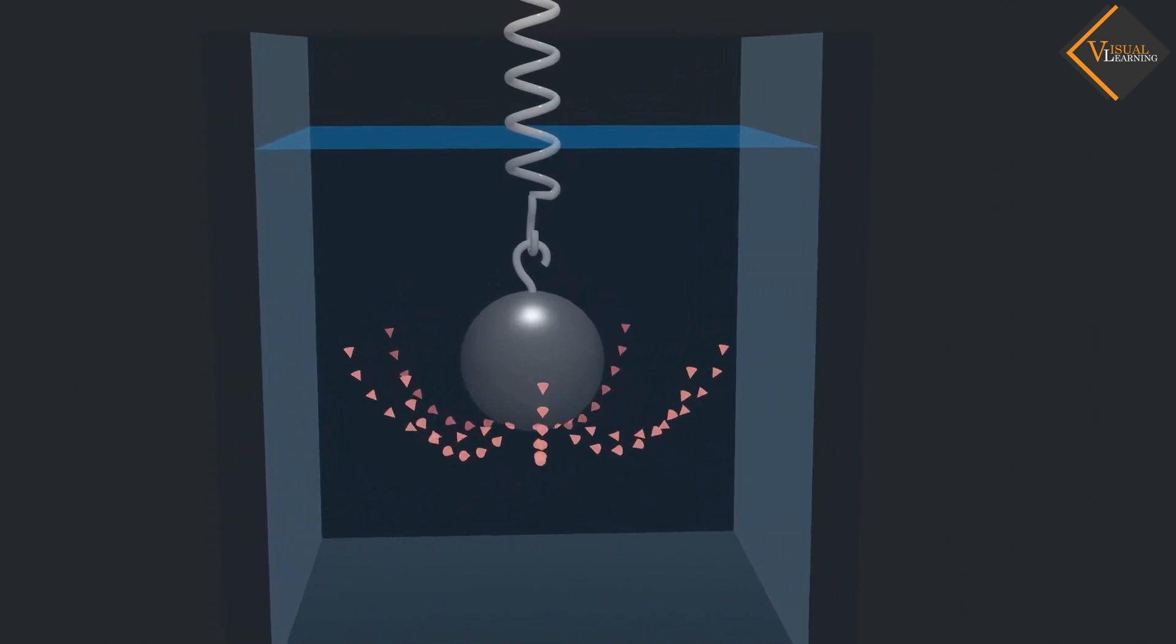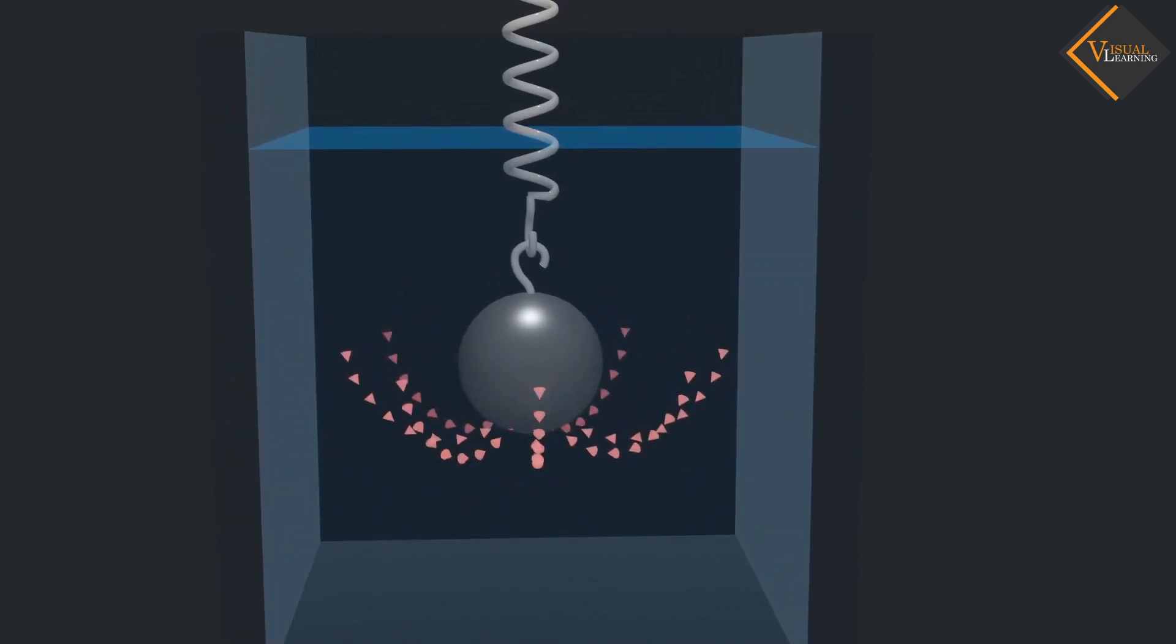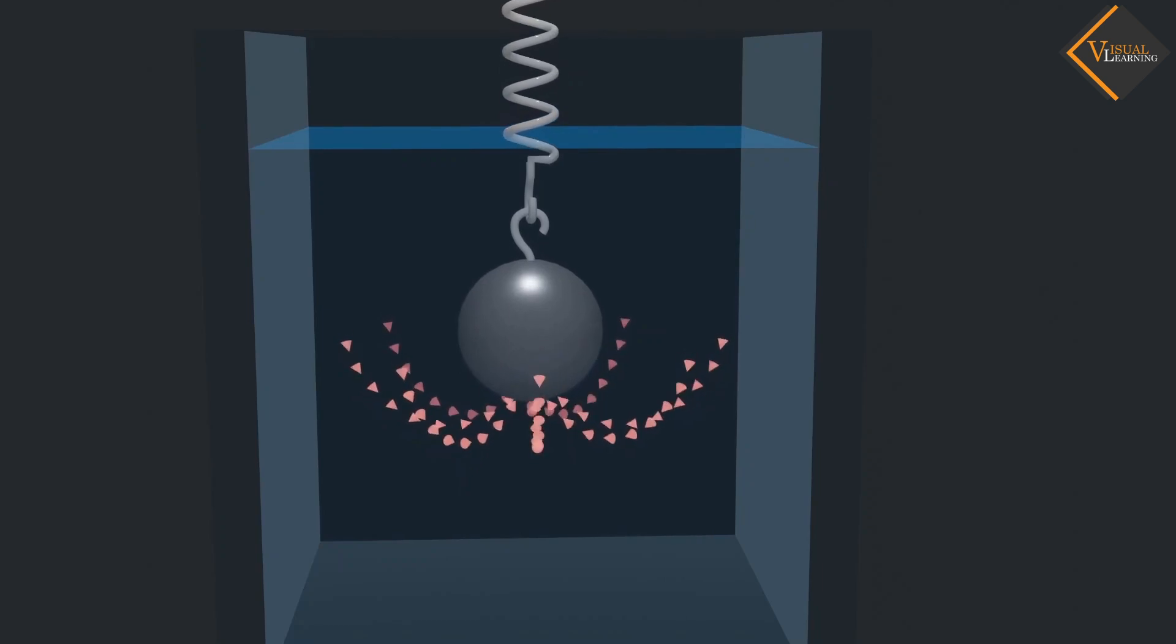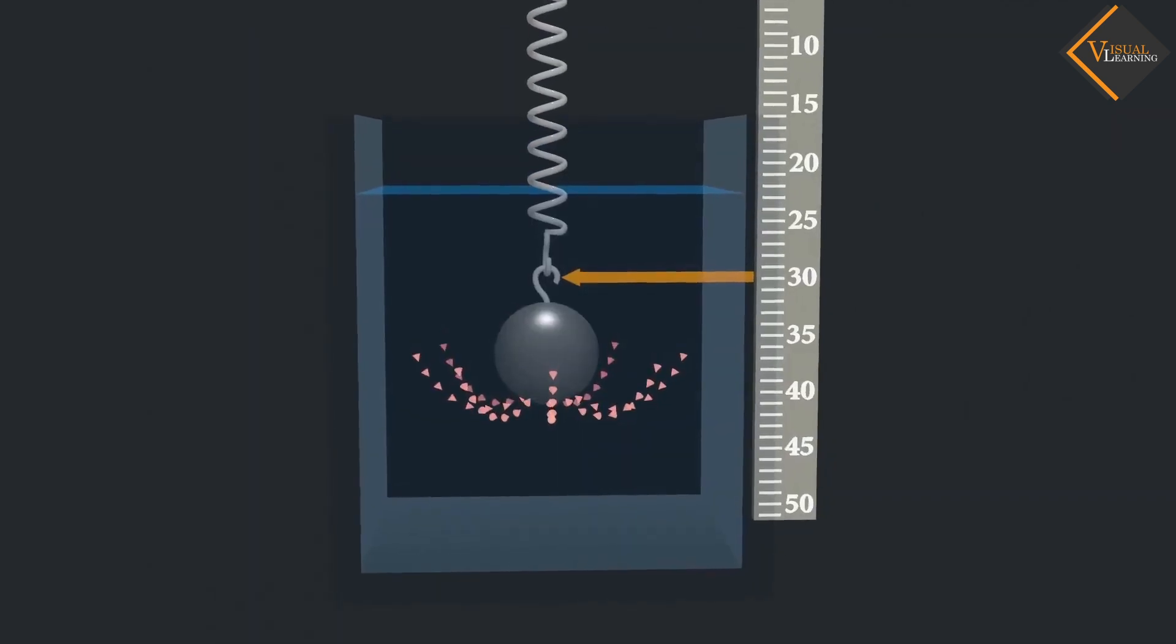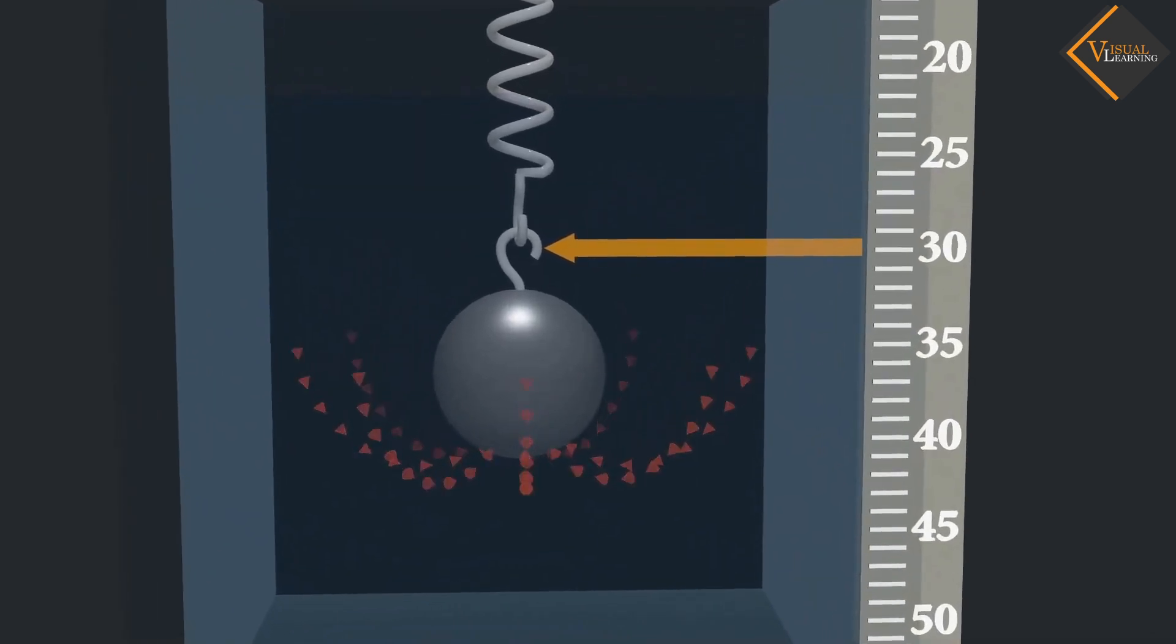Because an upward thrust acts on the iron ball, the iron ball moves up a little. And this can be measured by the scale.